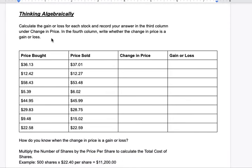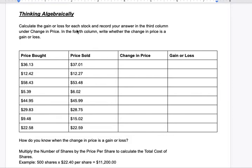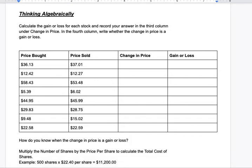Our first example: thinking algebraically. Calculate the gain or loss for each stock and record your answer in the third column, which is the change in price. In the fourth column, write whether the change in price is a gain or loss using a plus or minus. So, you bought the stock at $36.13 and sold it at $37.01. That's $37.01 minus $36.13, which equals an $0.88 change in price — that's a gain, so you write a plus.